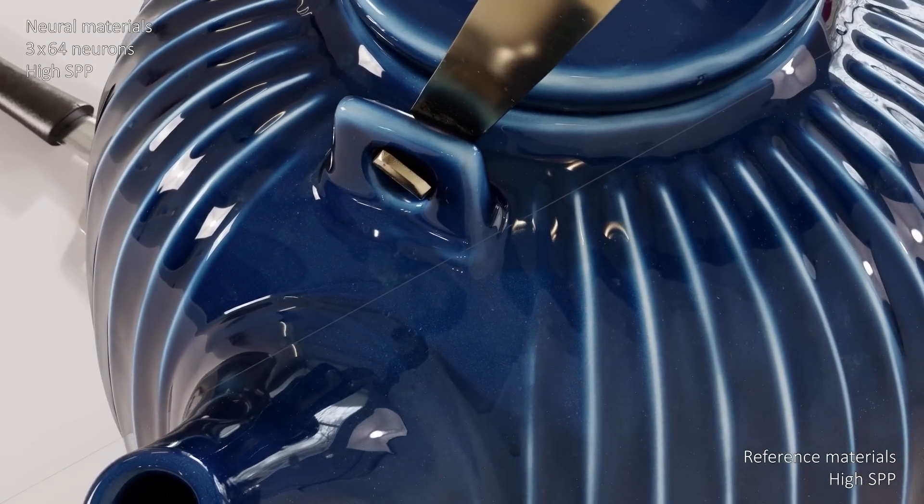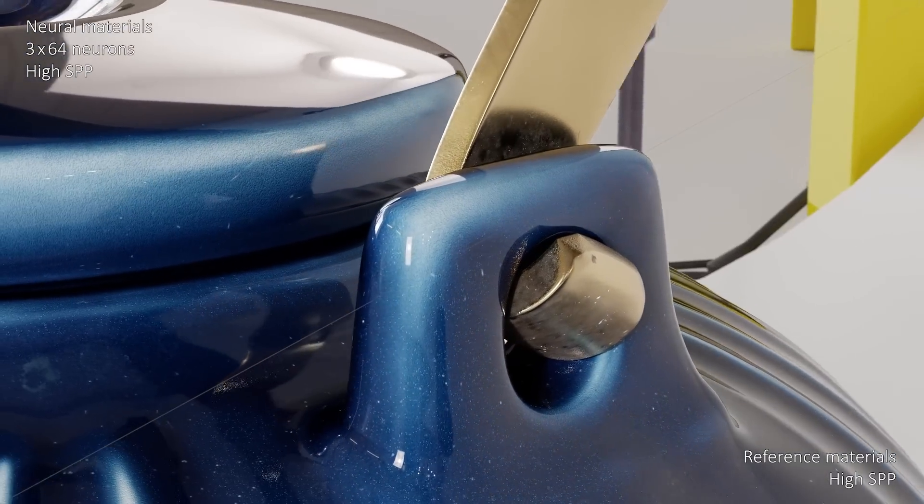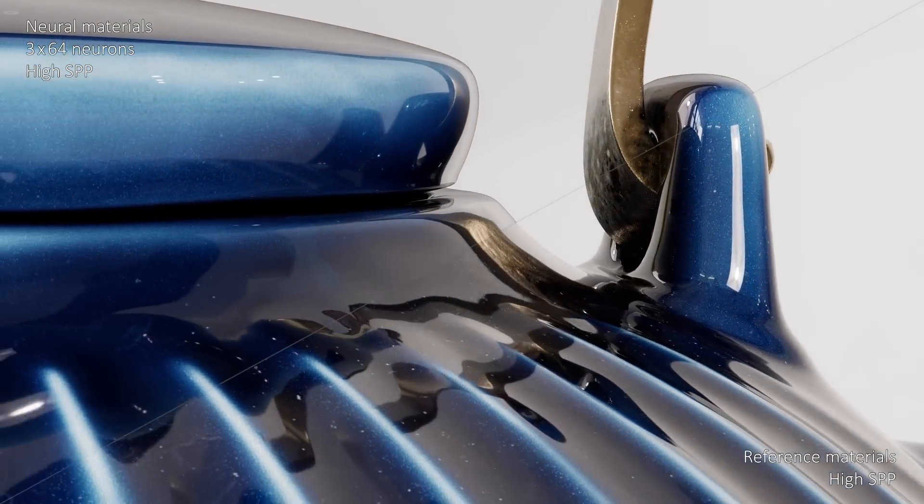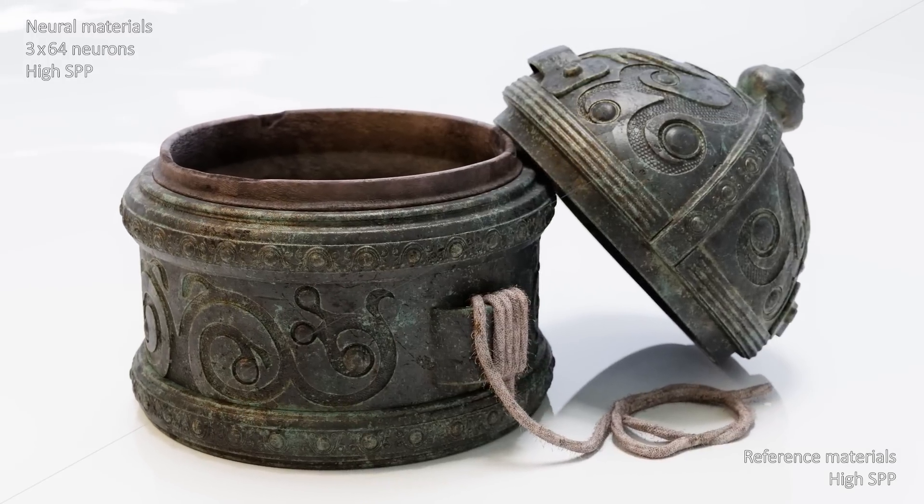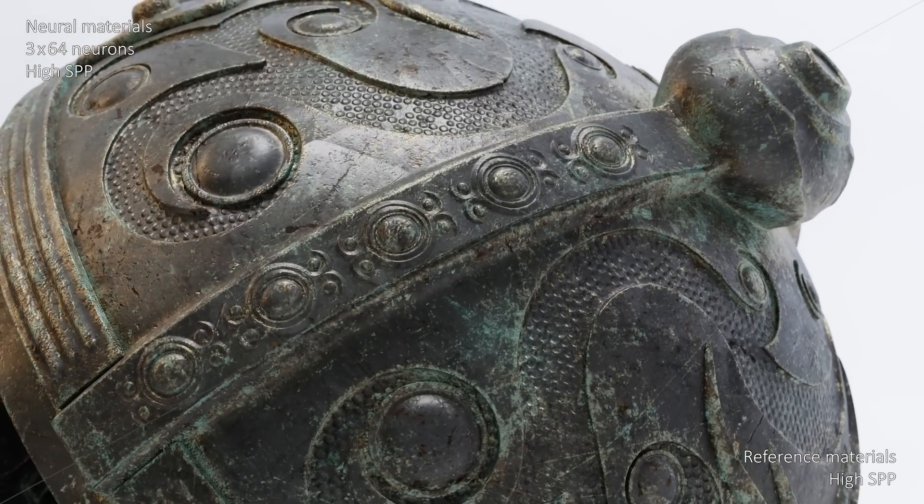Here are some comparisons between the reference material defined using a shading graph in the bottom right, and our neural representation in the upper left. The model really captures the looks of these materials, matching not only the complex behavior of the reflections, but also the fine details on these intricate surfaces.